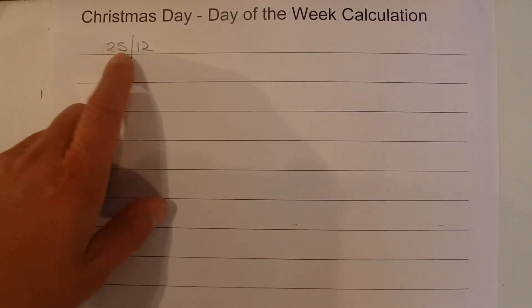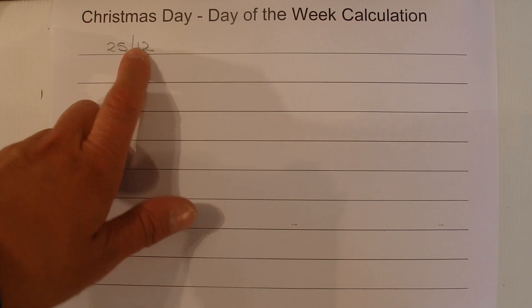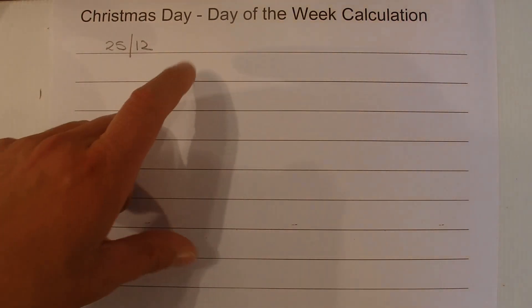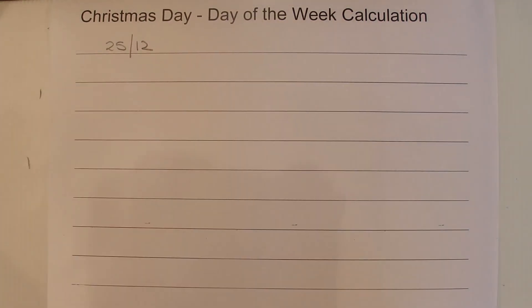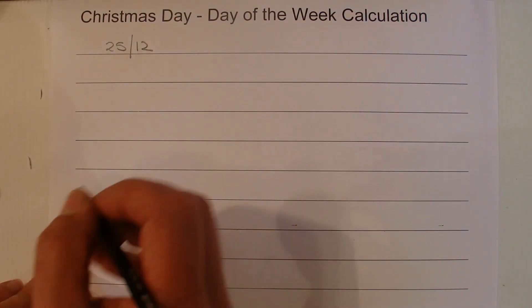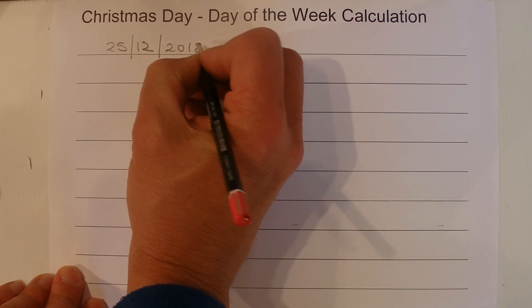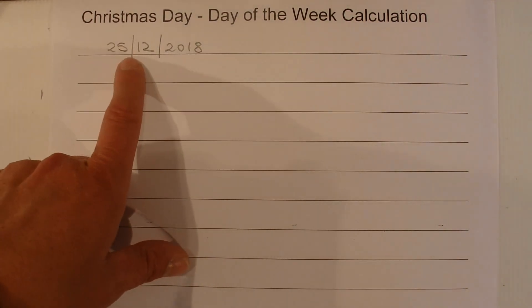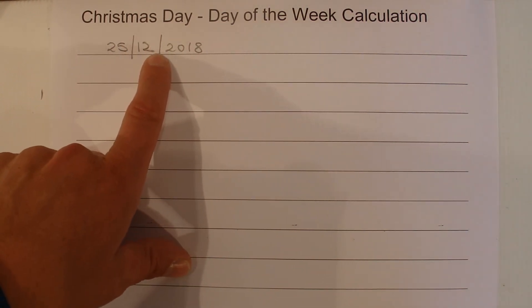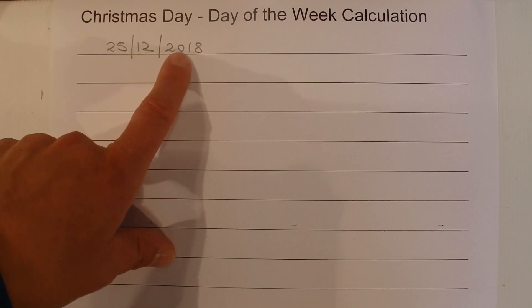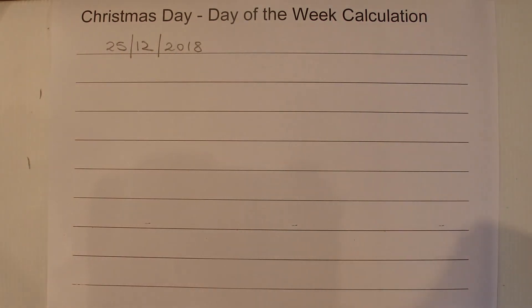well, happily we all know that Christmas Day is always on the 25th of December, but the day of the week varies from year to year. It could be a Sunday, Monday, Tuesday, or any day right through to Saturday. So first of all, I'll show you how to calculate the day of the week Christmas Day falls on for the 25th of December 2018.